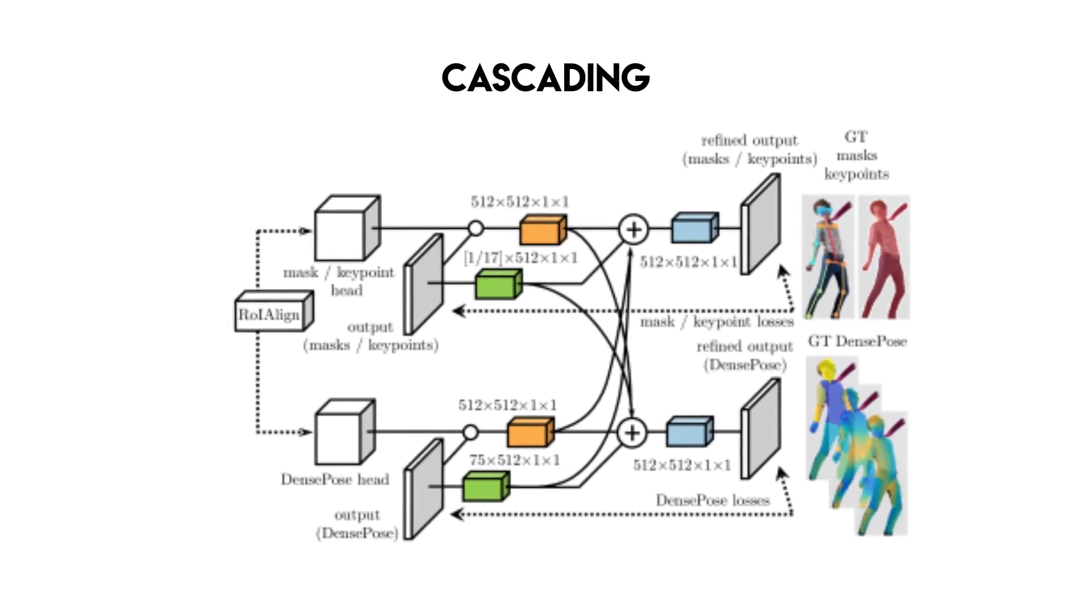To improve the model, they used a technique called cascading, meaning using a collection of models using all the information collected from the output of one model as additional information for the next classifier in the cascade. The output of the region of interest align module feeds into the dense network as well as networks for the masking and keypoints tasks. The first stage predictions from all tasks are then combined and fed into a second stage refinement unit of each branch.